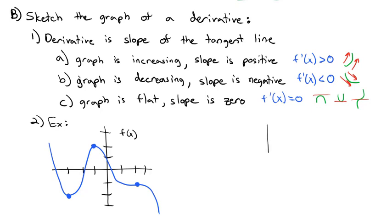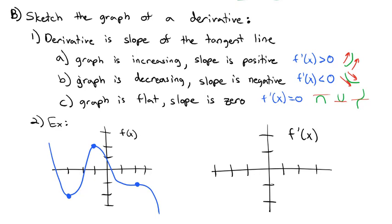To draw a graph of f prime of x, we make observations about the original graph. The first useful observation is identifying where the tangent line is completely flat — at all those points, the slope equals 0, so f prime equals 0. The slope is 0 at x equals negative 3, at x equals negative 1, and at x equals positive 2. Those are the x-intercepts of the derivative graph, because it's describing the slope.